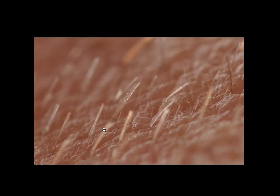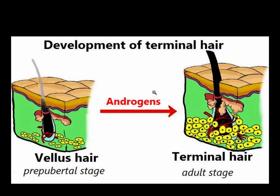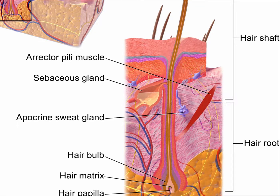Hello, welcome to Pathagonia, this is Jay. Today we're going to talk about vellus hair cysts and vellus hairs in general. These are the colloquially known 'peach fuzz' — the thin, small hairs that you see a lot during childhood. As you go through puberty, some of the vellus hairs, through the effects of androgens, become terminal hairs.